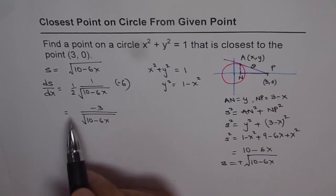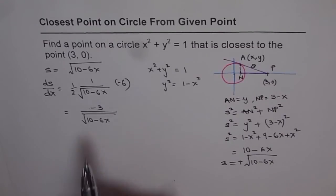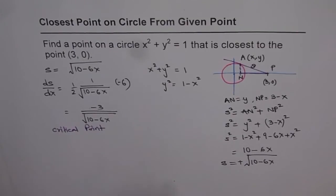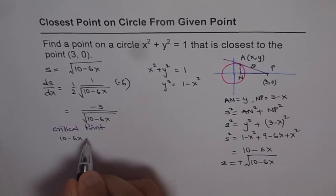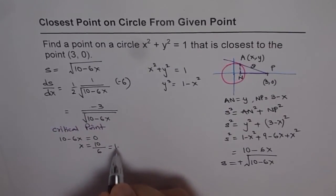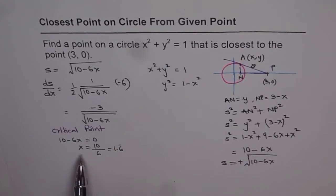Now this gives us a critical point. Critical point for us is when this becomes either 0 or undefined. It cannot be 0 but it can be undefined. So let's find the point where it is undefined. The point will be when denominator is 0. So denominator 0 means 10 minus 6x equals to 0, or x equals to 10 over 6. Now 10 over 6 is a number which equals to around 1 point 6. So we get a point which says x is 1.6.